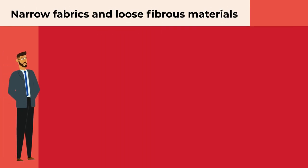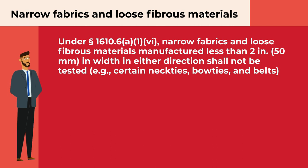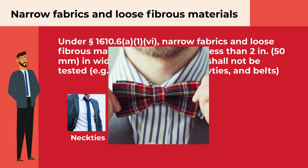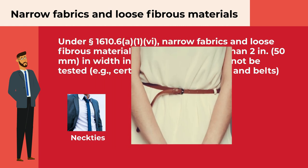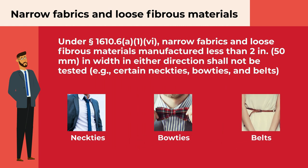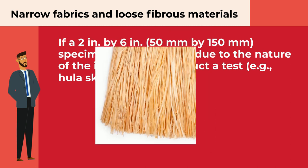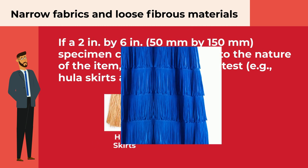Narrow fabrics and loose fibrous materials manufactured less than two inches in width in either direction shall not be tested. This includes certain neckties, bow-ties, and belts. If a 2-by-6-inch specimen cannot be cut due to the nature of the item, do not conduct a test. This includes items like hula skirts and fringe.